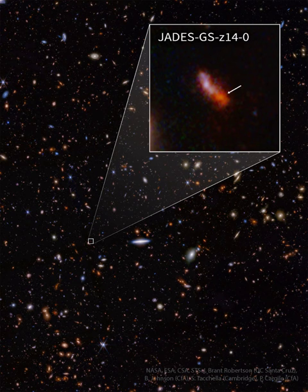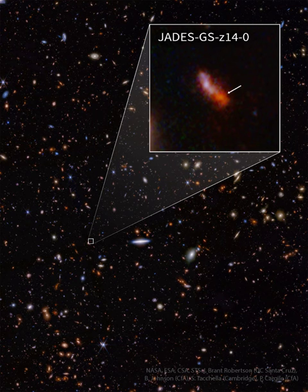Most galaxies formed at about three billion years after the Big Bang, but some formed earlier. Pictured in the inset box is JADES GS-z14-0, a faint smudge of a galaxy that formed only 300 million years after the universe started. In technical terms, this galaxy lies at the record redshift of z equals 14.32.